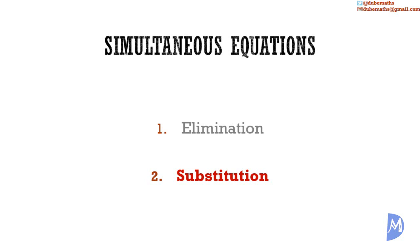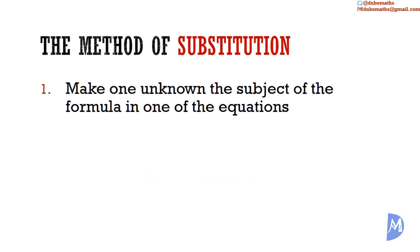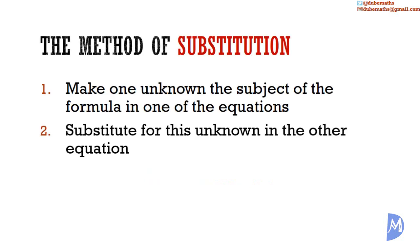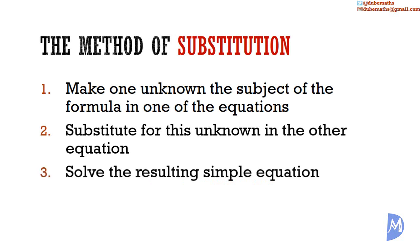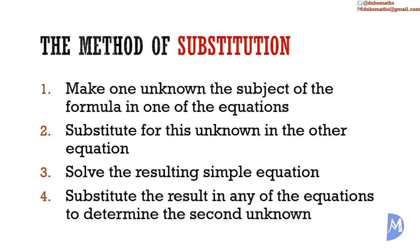In the method of substitution, we make one of the unknowns the subject of the formula. We substitute this in the second equation. We solve the resulting simple equation for one unknown, and then we substitute this unknown in any of the other equations to determine the second unknown. I will now work through the same four examples from the previous video.